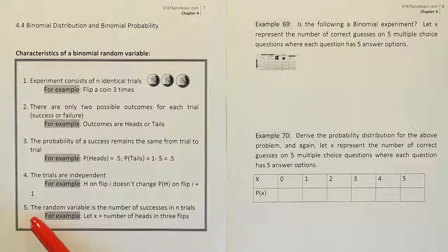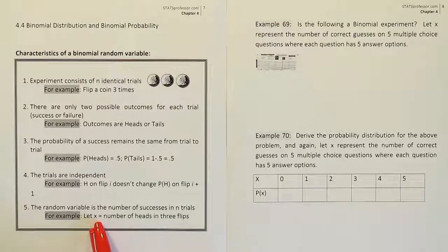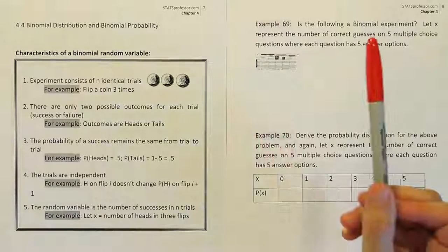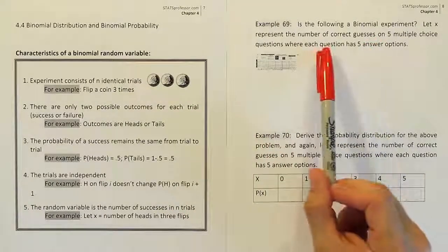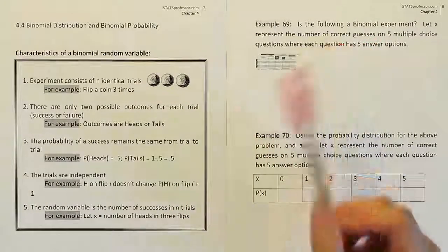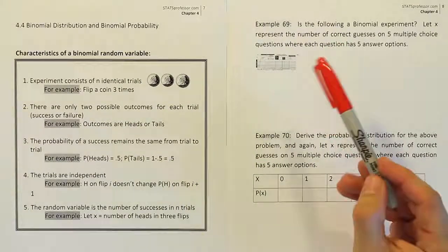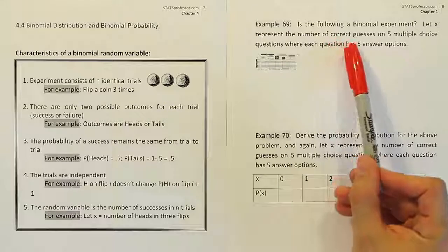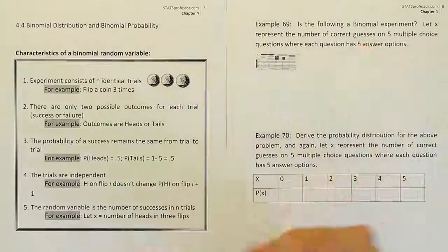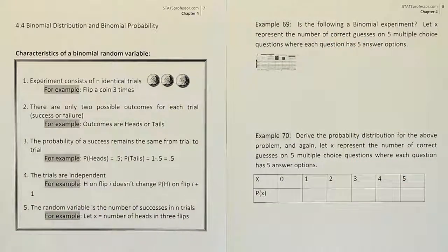Lastly, criteria five says we should have a variable x that counts the number of successes. Here we're looking for the number of correct guesses, so we define a success as a correct guess. Yes, x represents the number of successes. So this problem involves a binomial experiment — for example 69, yes, it's a binomial experiment.